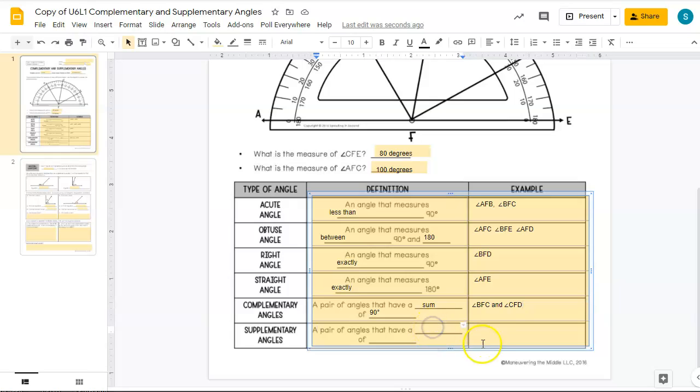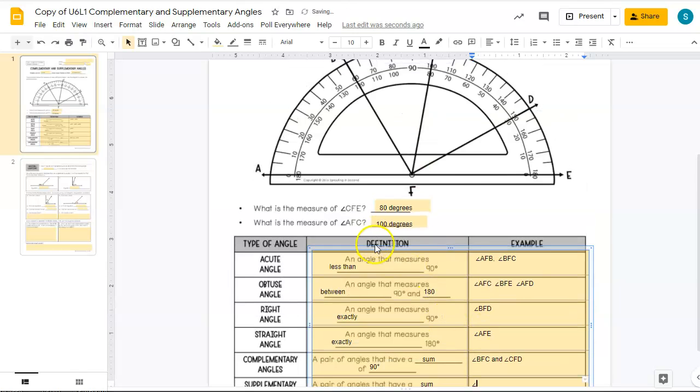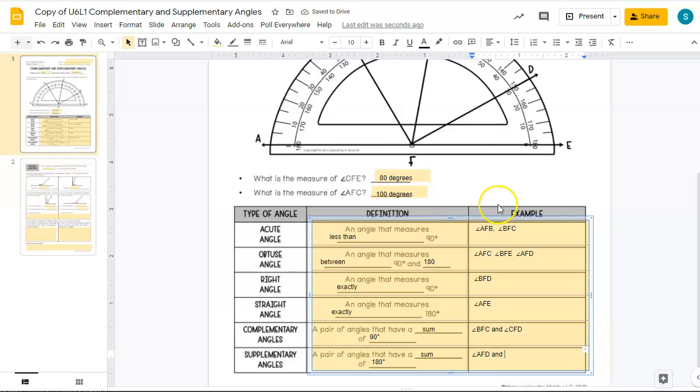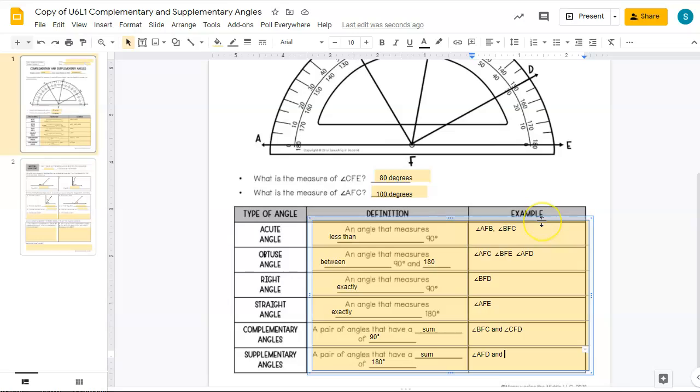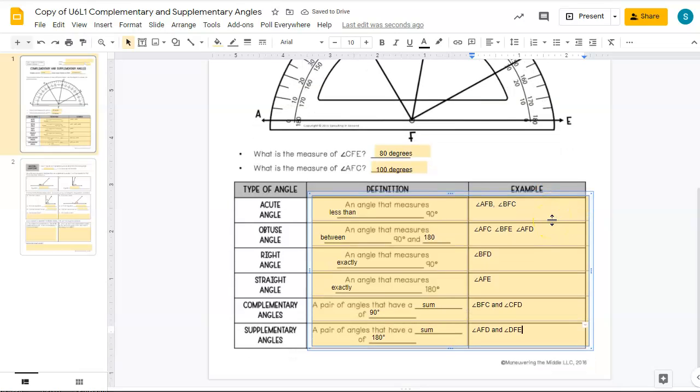So remember, complementary angles always come as a pair. And the two angles, when we add up their measures, add up to 90 degrees. Supplementary angles. Well, the pair of angles that have a sum of measures. And the sum of their measures is 180 degrees. And my first angle is angle AFD. And what other angle would get us up to a straight one? Well, that would be DFE. So those are our two angles.